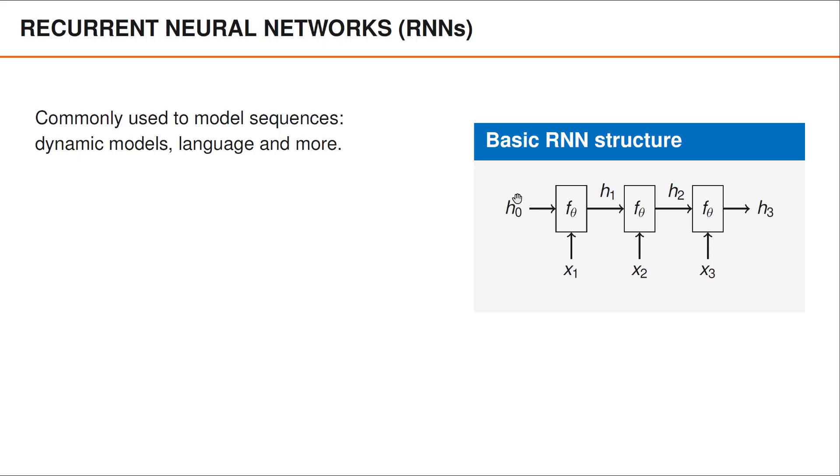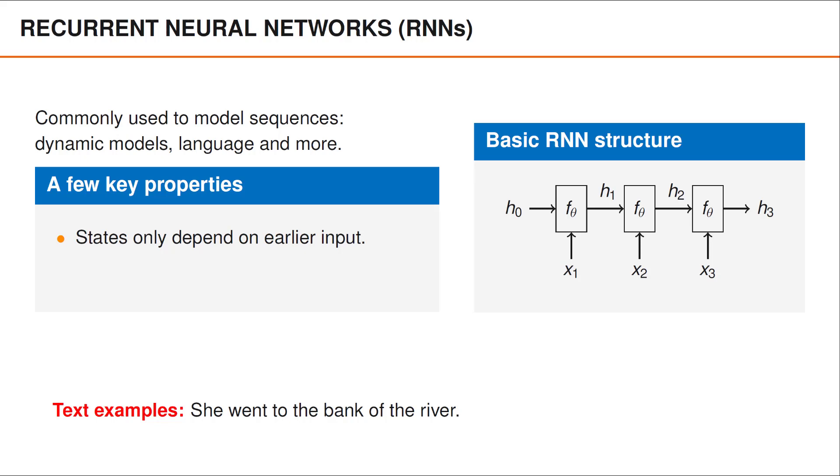For instance, we compute the hidden state H1 by passing the original hidden state H0 and the input X1 through the neural network. The new hidden state H1 is then passed back into the network along with the new input X2. The same procedure is then repeated until the end of the sequence.